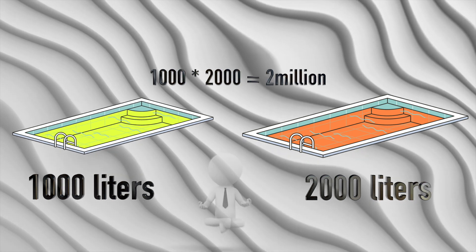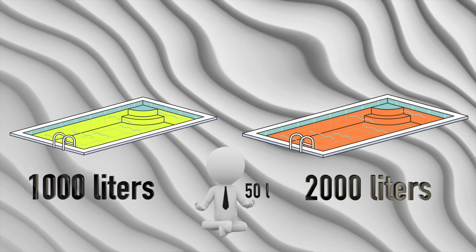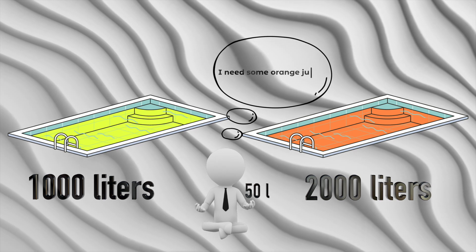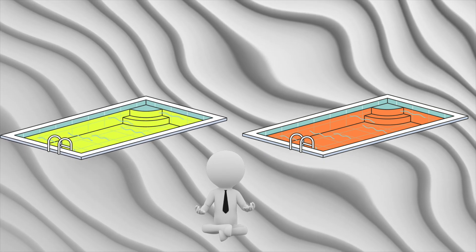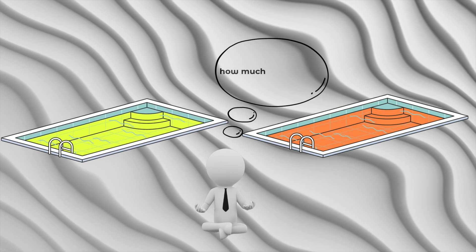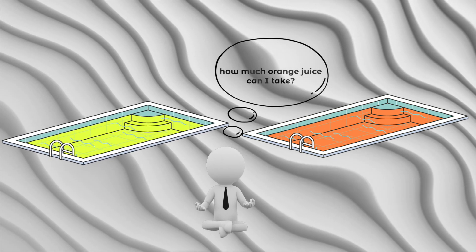Now, here comes a trader. He has 50 liters of apple juice and would like some orange juice in return. So if he adds 50 liters of apple juice into the apple juice bowl, how much orange juice should he be allowed to take to keep the scarcity ratio the same?